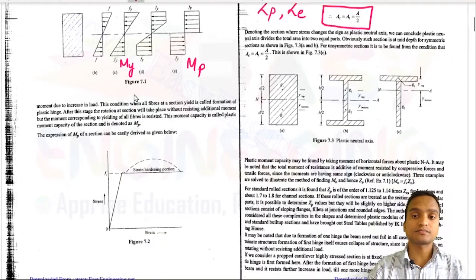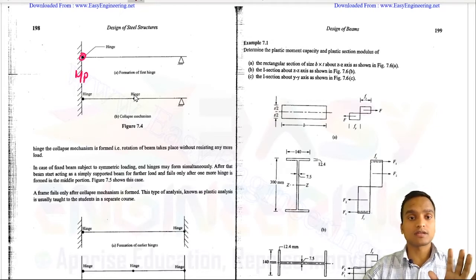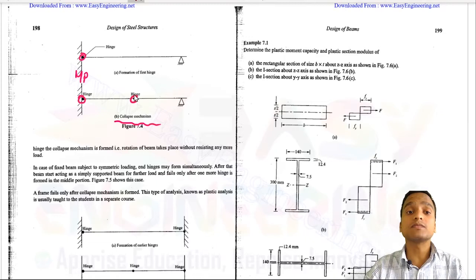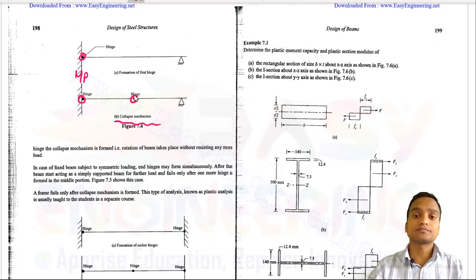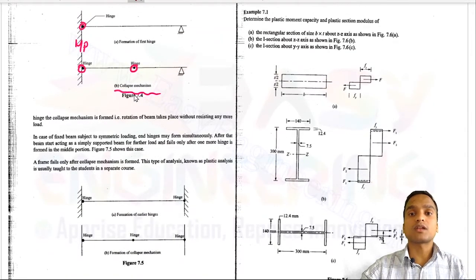Plastic hinges start forming at the location where the bending moment is maximum. When the bending moment reaches the value MP, plastic hinge formation occurs. When a sufficient number of plastic hinges form to create a collapse mechanism, the member will collapse. Different structures have different requirements for the number of plastic hinges.